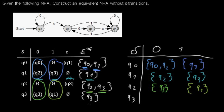And last but not least, for Q3, we just can take what's already here. And now we have the new transition table for the equivalent non-finite automaton, but without epsilon transitions. Thank you.